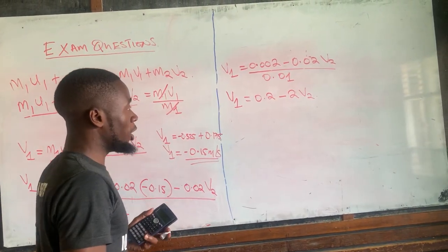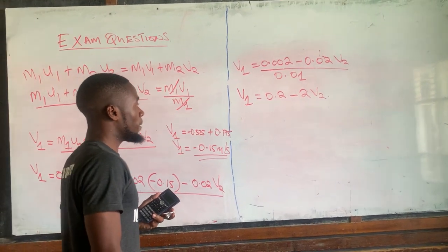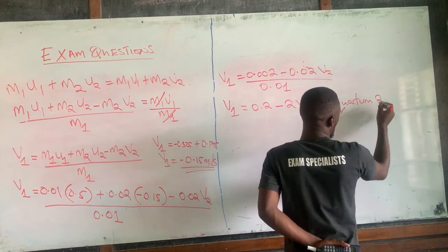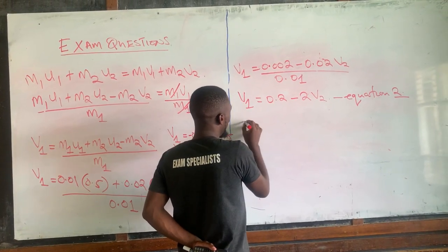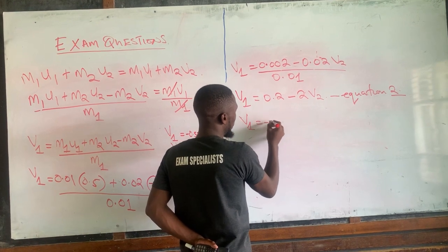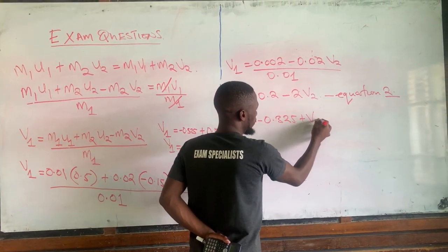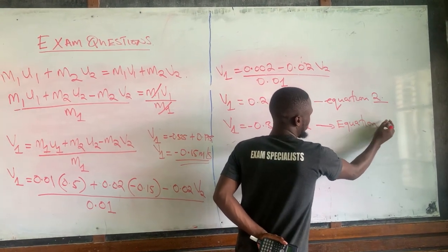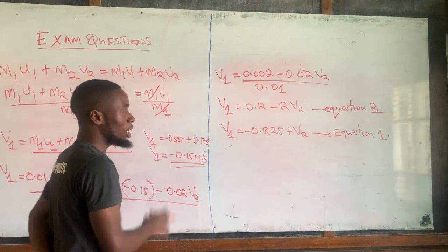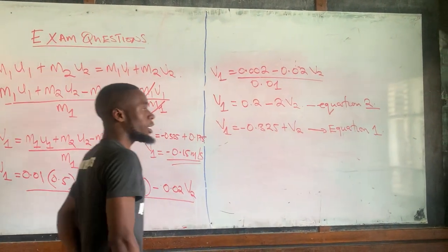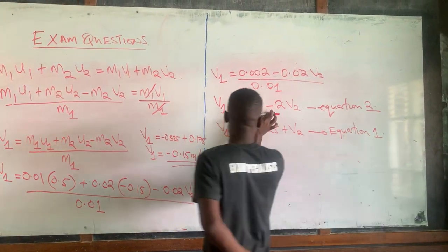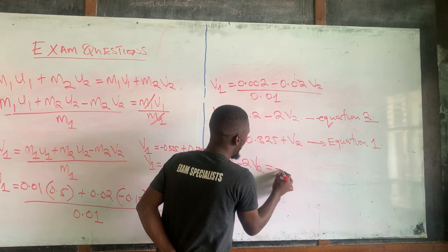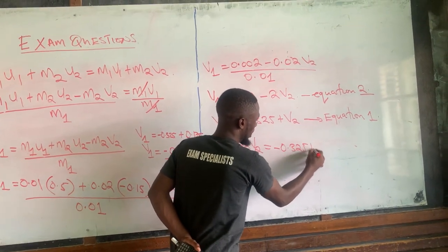Now we need to equate the two equations to each other and solve simultaneously. Equation 2 gives v1 equals 0.2 minus 2v2, and equation 1 gives v1 equals negative 0.325 plus v2. Setting them equal: 0.2 minus 2v2 equals negative 0.325 plus v2.